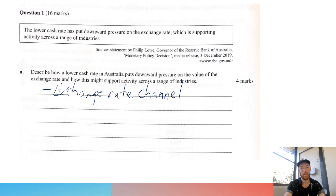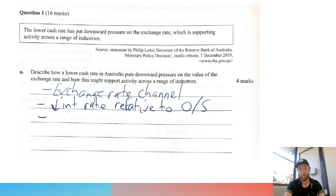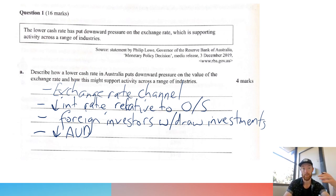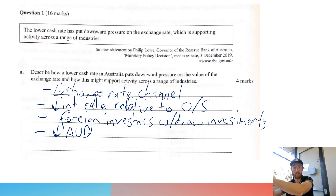When you talk about the exchange rate channel, you're going to talk about how if Australia's interest rate is lower relative to other countries, that means foreign investors withdraw their investments in search of a greater return elsewhere. When the interest rate falls relative to overseas, foreign investors withdraw their money from Australian financial institutions in search of a greater return elsewhere. This then leads to a depreciation of the AUD, and that's going to be a lot of your marks right there.